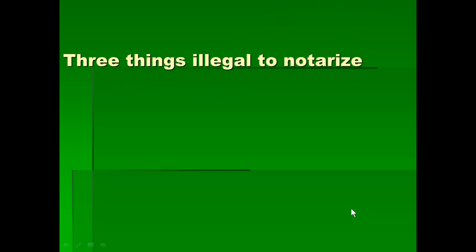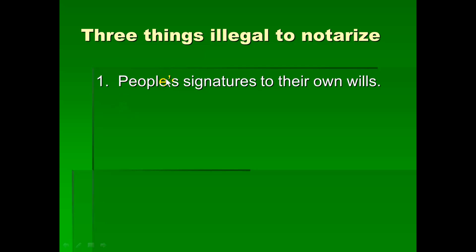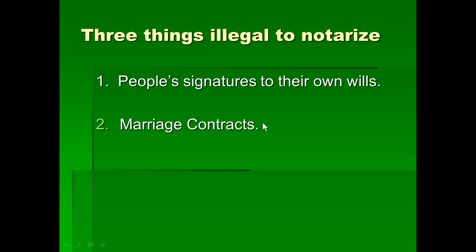The three things that are illegal to notarize: first, people's signatures to their own wills. Only a lawyer with a notary license can notarize a will to make it recordable and admissible — people need legal advice before their will is recorded so everything they're leaving for their loved ones gets to them properly. Second, we can't marry people — we cannot notarize contracts of marriage.